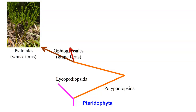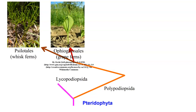We have the ophioglossales, which are the grape ferns. The reason they're called grape ferns is you can see a center part coming up with a spike out of the top, and that spike has all these little things on it that look kind of like grapes clustered together.